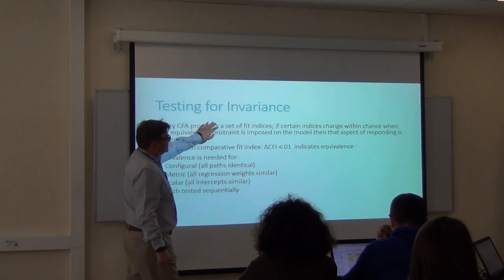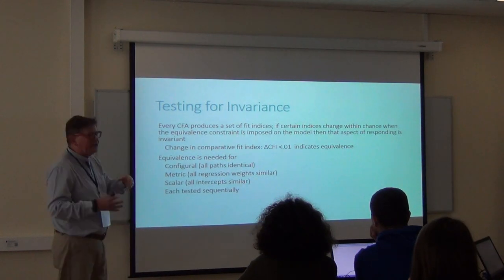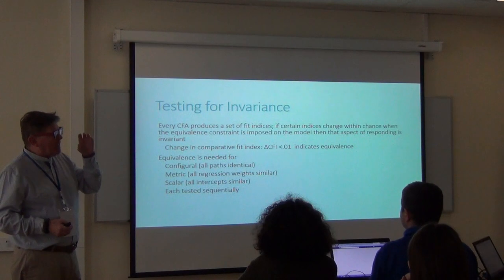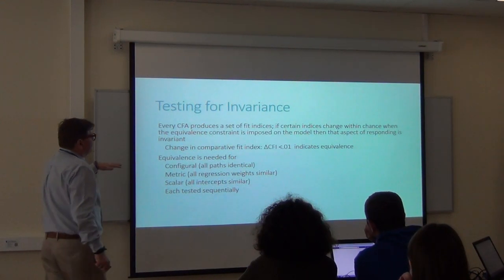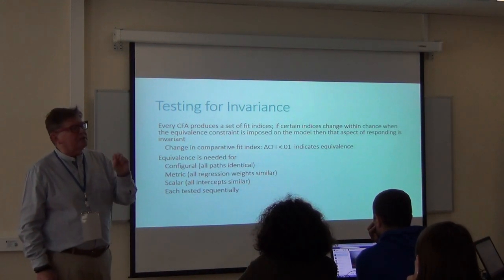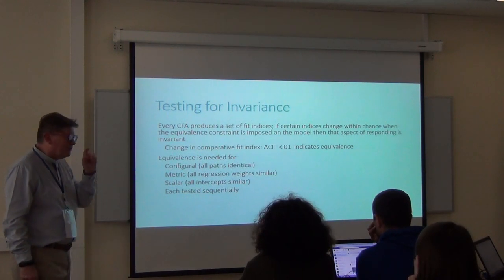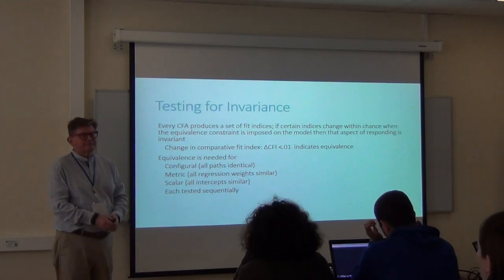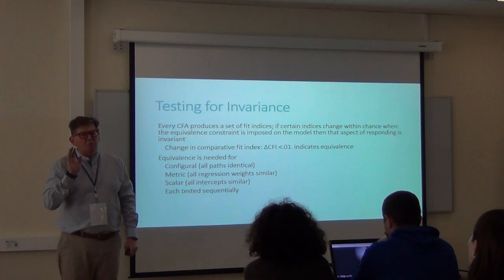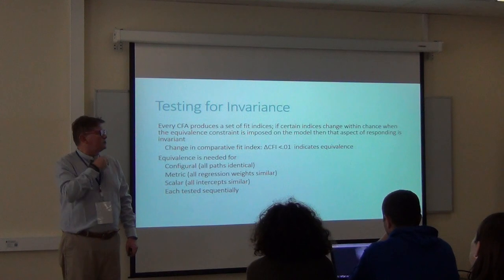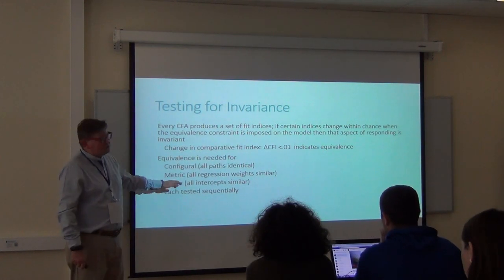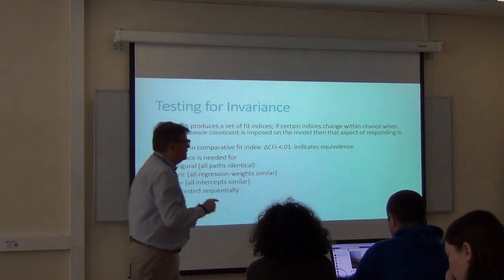Every CFA produces a set of indices. Equivalence requires three things. First, configural invariance: all the paths, all the latents, all the items — is everything the same in terms of what paths were set to seed value, what was free, what covariances, what regressions? If they're all identical, the RMSEA should be acceptable. Second, metric invariance: are the regression weights the same? A latent trait has a linear relationship, so we check whether the beta value for every item is more or less the same between groups.